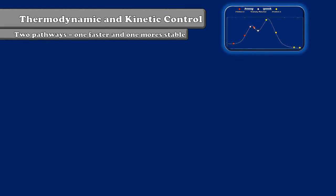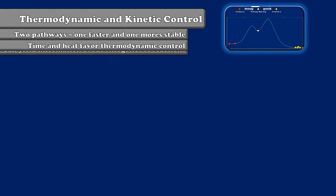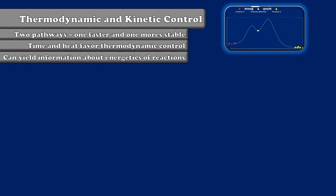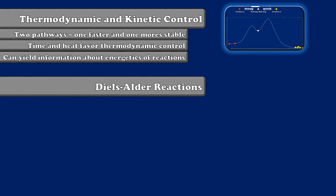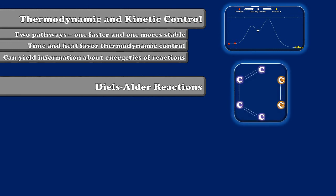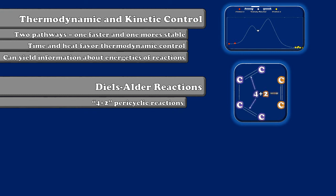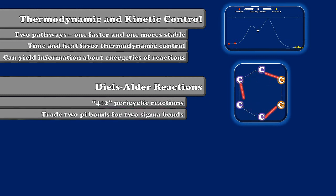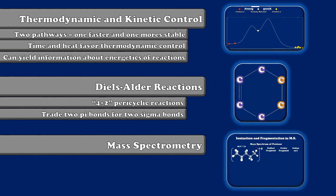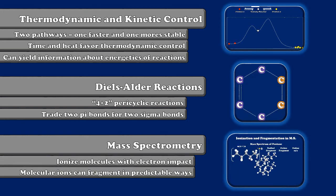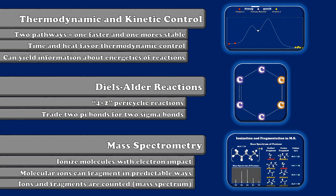Let's sum up what we've talked about during this fundamentals lecture. We discussed thermodynamic and kinetic control — situations in which two pathways exist, one fast but one to a more stable product. We talked about how time and heat favor having thermodynamics in charge, and how in situations like this we can get information about the relative free energies of products formed in reactions with multiple pathways. Then we talked about Diels-Alder reactions — a technique allowing us to make carbon-carbon single bonds, called 4+2 reactions because they involve 4 pi electrons from a diene and 2 from a dienophile, exchanging two pi bonds to form two sigma bonds in an enthalpically driven reaction. Next we talked about mass spectrometry and how we can ionize molecules with electron impact, causing them to fragment in predictable ways leading to fingerprints that allow us to characterize molecules.